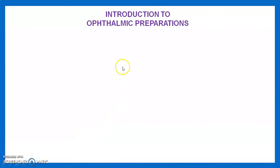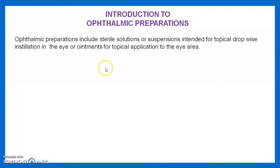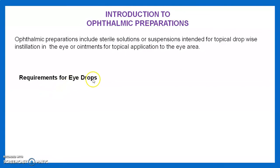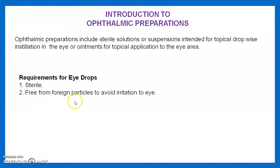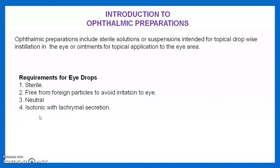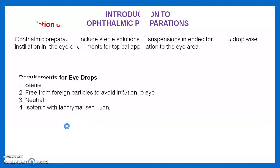Now we see the theory regarding ophthalmic preparations. Ophthalmic preparations include sterile solutions or suspensions intended for topical drop-wise installation in the eye, or ointments for topical application to the eye area. Requirements for eye drops: they should be sterile, free from foreign particles to avoid irritation, neutral, and isotonic with lacrimal secretion. Our lacrimal secretion pH is almost 7.4.